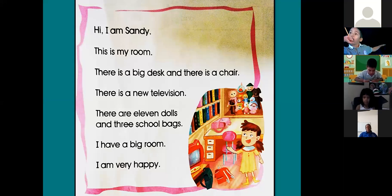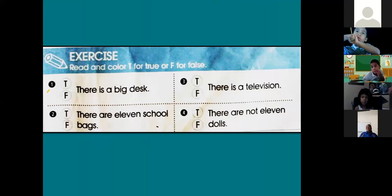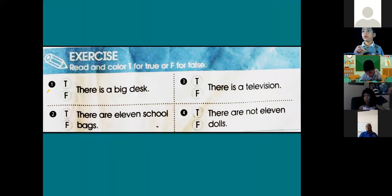All right, chicos, muy bien. Como pudimos notar, and now we are going to read and color T for true or F for false. Pueden usar colores en esta, chicos. A la T la pueden poner de color verde y a la F la pueden poner de color roja. Perdón, a la T la ponen verde y a la F la ponen roja. Students book page number 77.